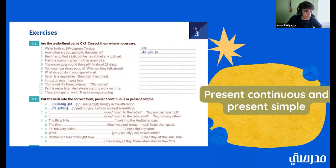Number 10. Come on. It's time to leave. OK. I come. What about that one? OK. I am coming. Good. Paul is never late. He's always starting work on time. Is that one good? Yes, that one is good. Good. They don't get on well. They're always arguing. That one is also OK. Good. Good.